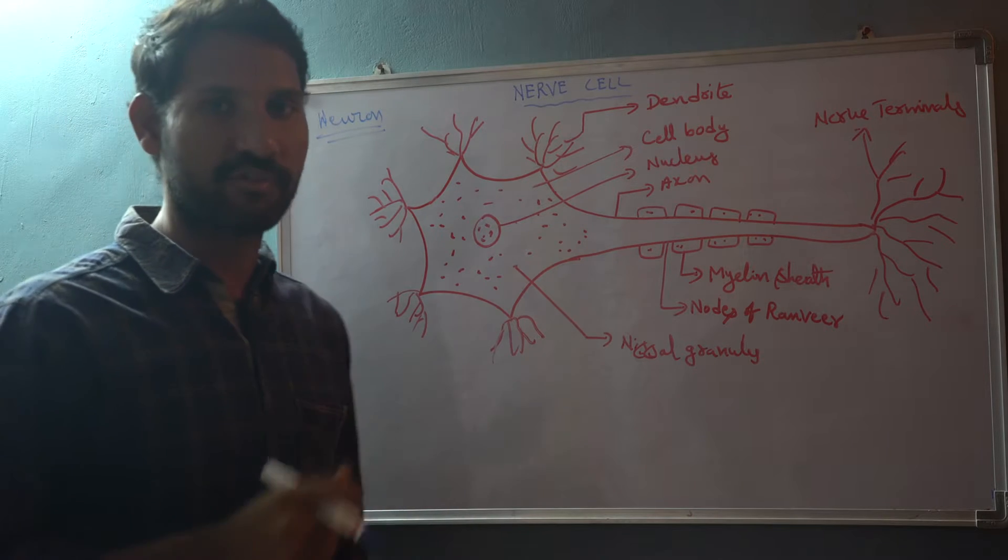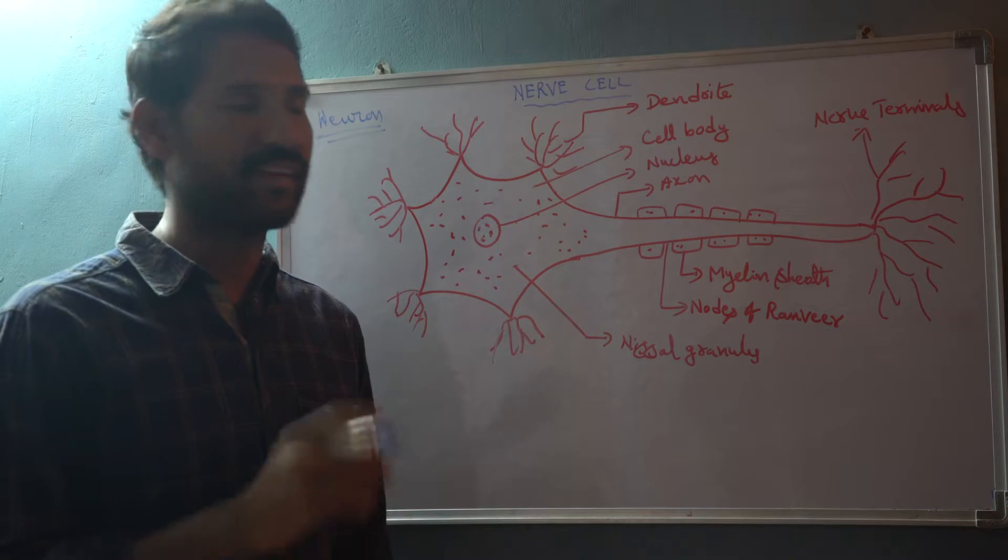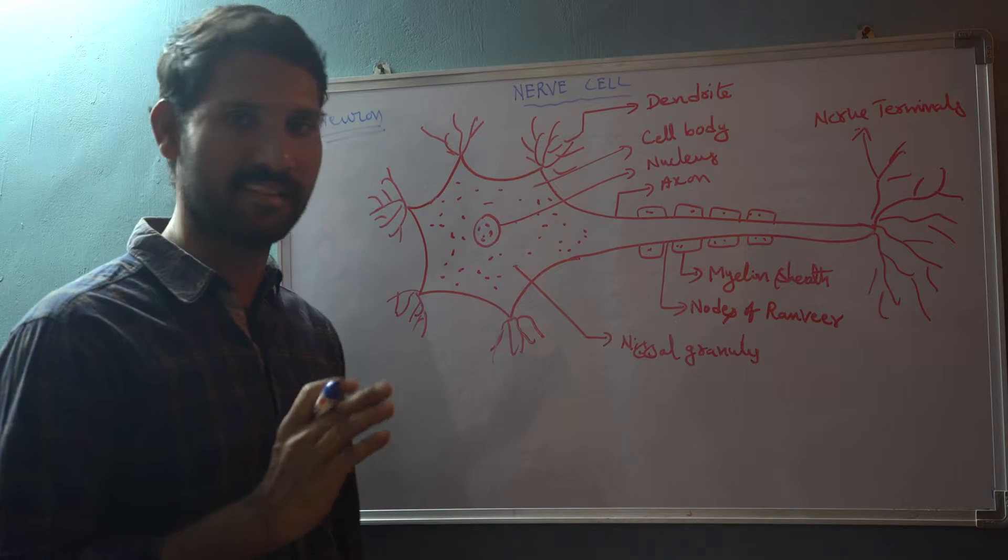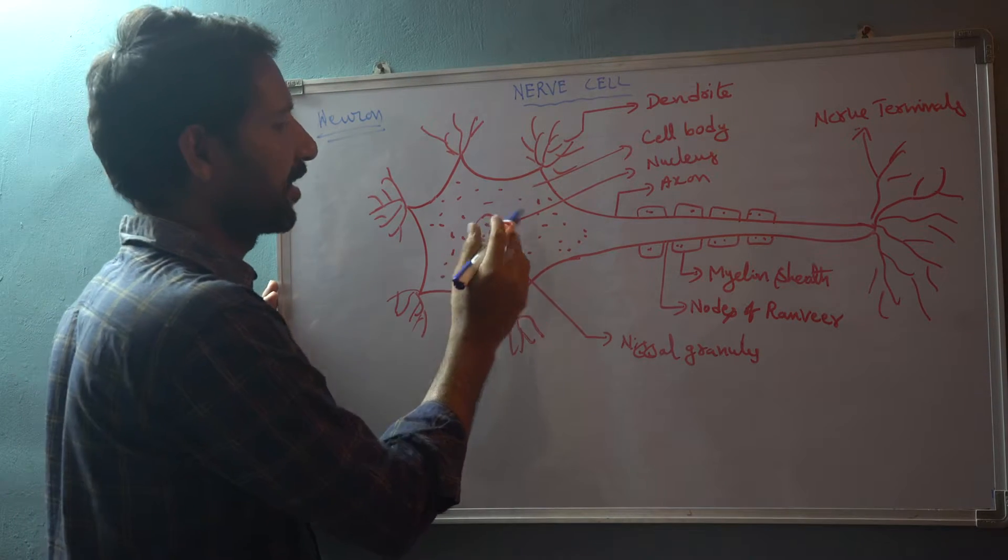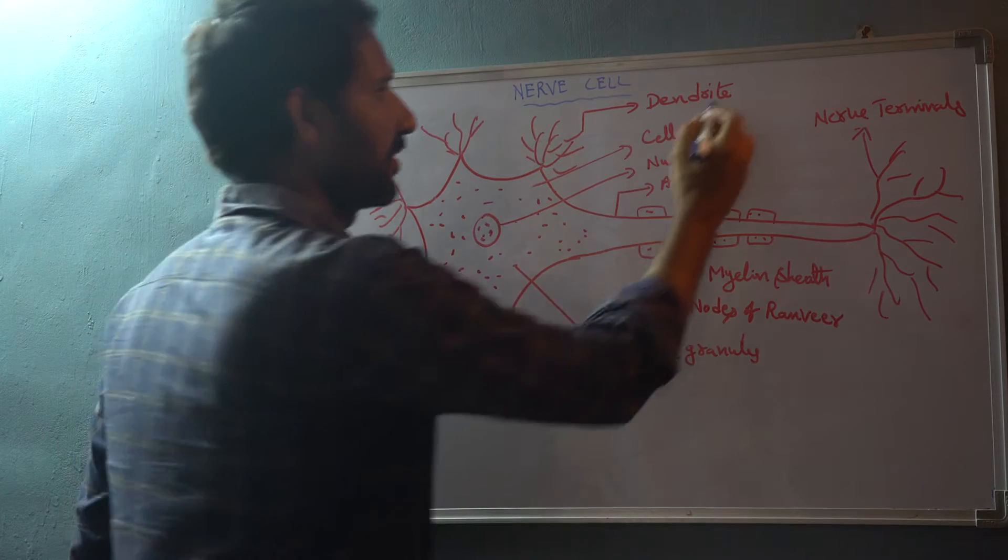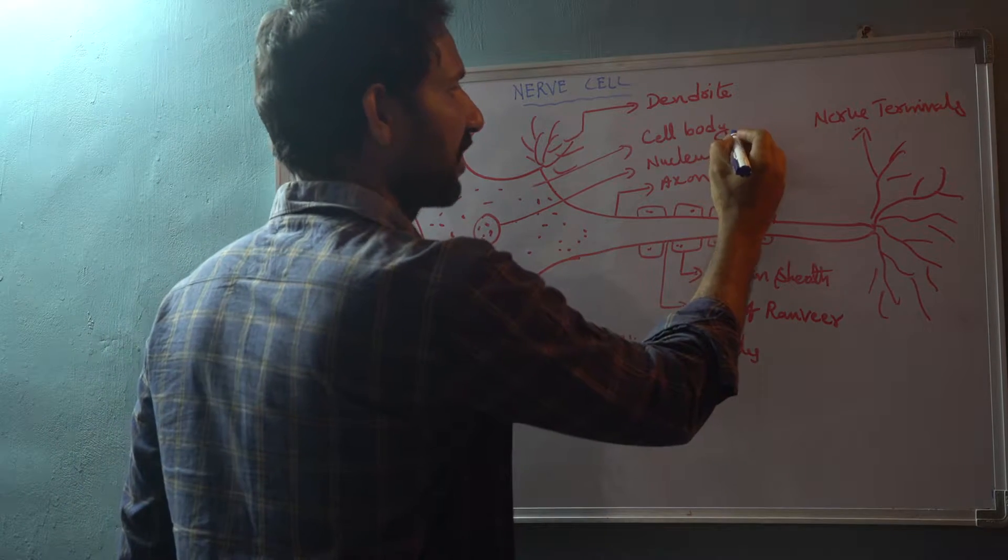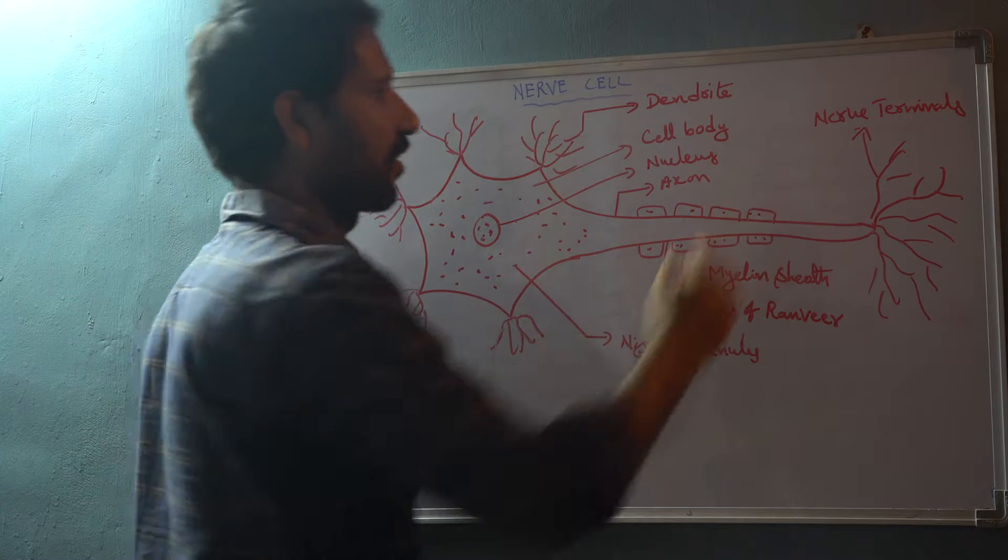Let us see the structure of the nerve cell here. The nerve cell has a very simple structure. It consists majorly of three parts: dendrites, cell body, and axon.